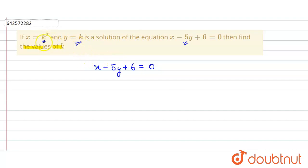So we simply put the value of x equals k² and minus 5 times y equals k and then plus 6 equals 0.